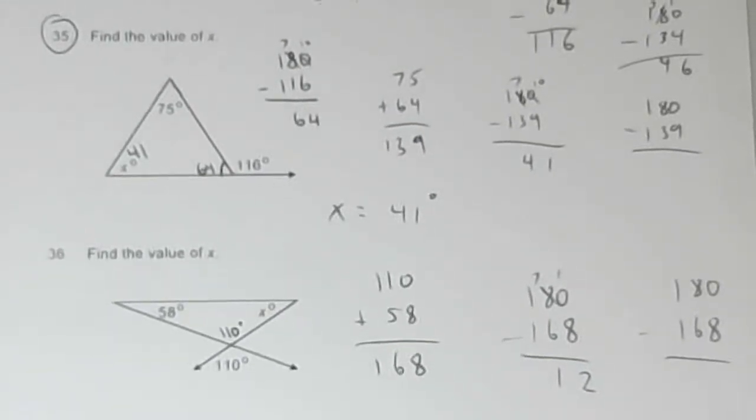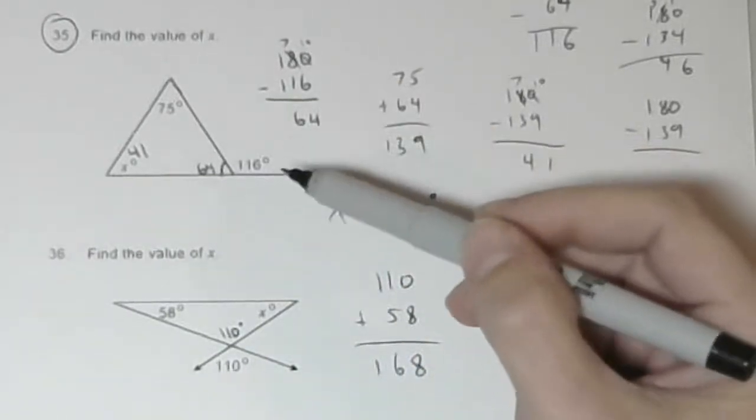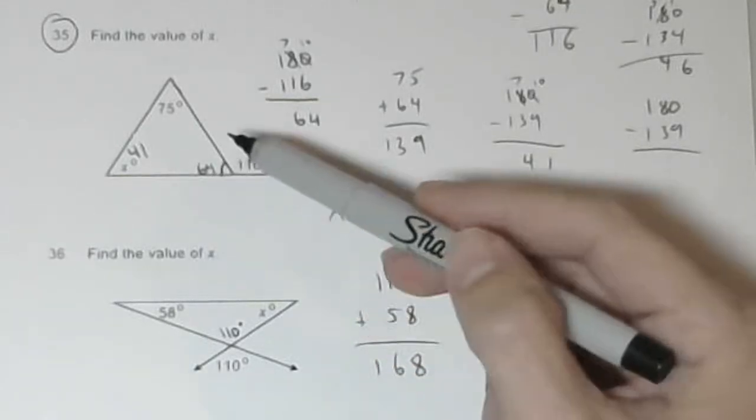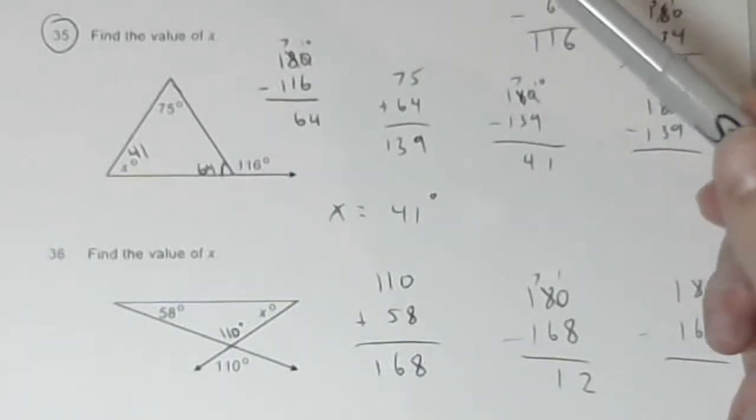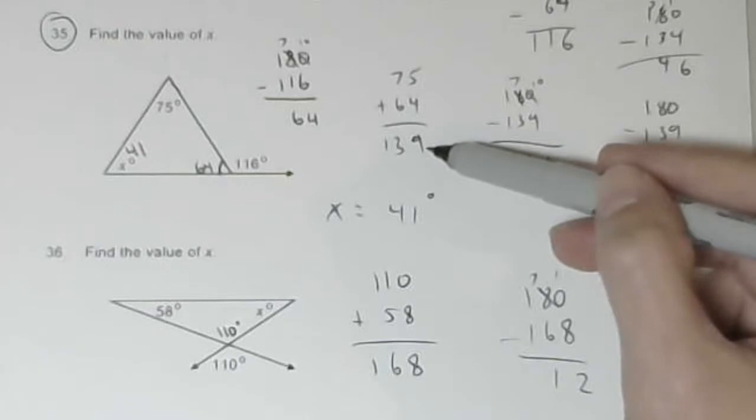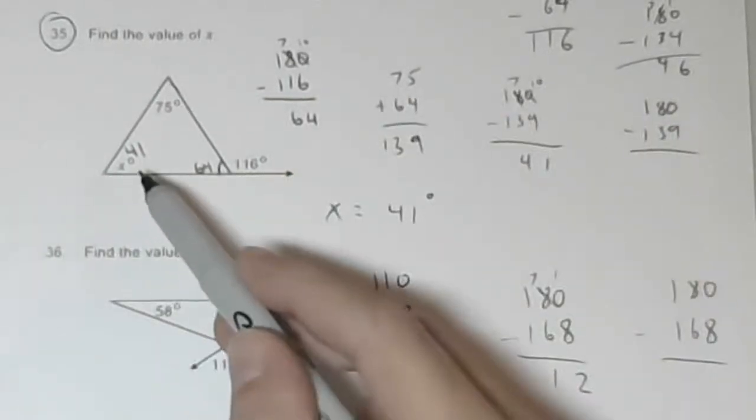If we want to find the value of x, the first thing we are going to do is see that these are a linear pair, so we will take 180 minus 116 to fill in 64. The three angles in a triangle sum to 180, so we will sum 75 and 64 to 139, we will subtract 180 minus 139 which gives us 41.